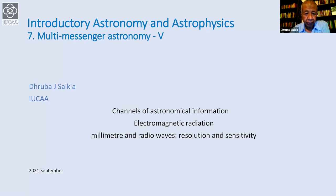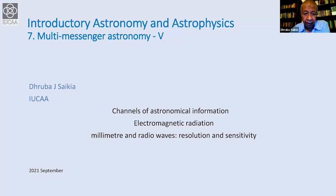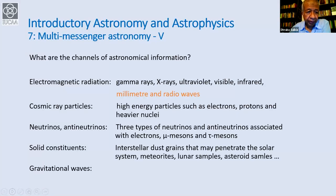Good morning. We have so far seen the telescopes and the kind of objects which emit in the optical, infrared, and ultraviolet region of the electromagnetic spectrum. Today we will look at the telescopes and the kind of celestial sources that emit at the radio and millimeter region of the electromagnetic spectrum, including cosmic ray particles, neutrinos, antineutrinos, and gravitational waves.